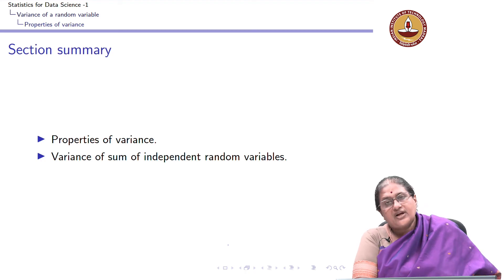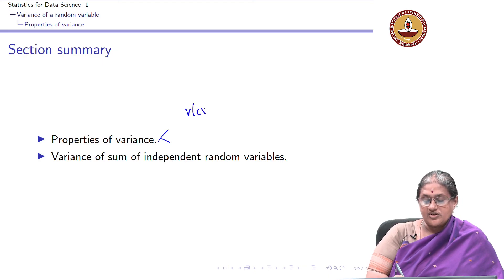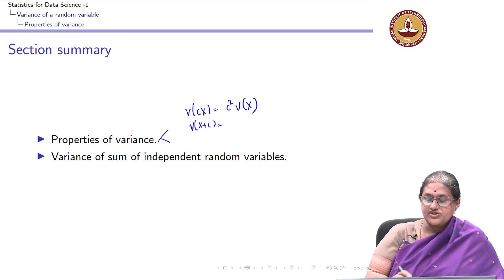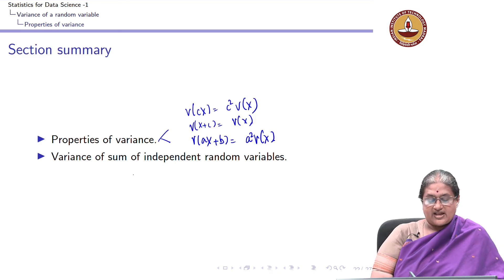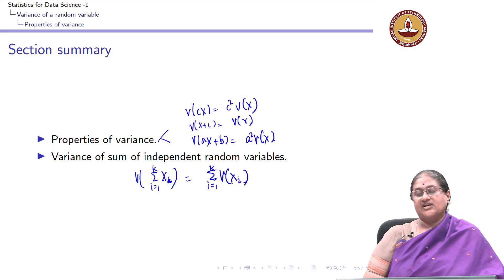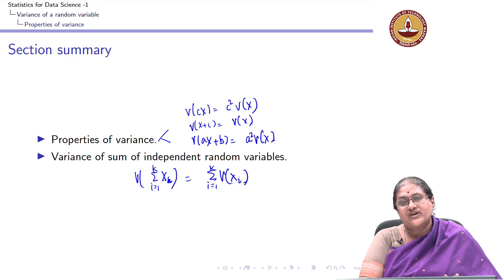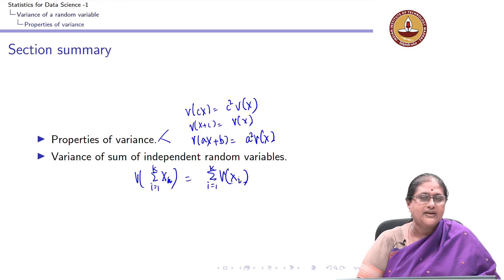In summary, the main properties of variance are: variance of c times x is c squared times variance of x; adding a constant does not change the variance; and this generalizes to variance of ax plus b being a squared times variance of x. Furthermore, the variance of the sum of k independent random variables x1 through xk is the sum of their individual variances. These are the two important properties, which we applied to earlier distributions.